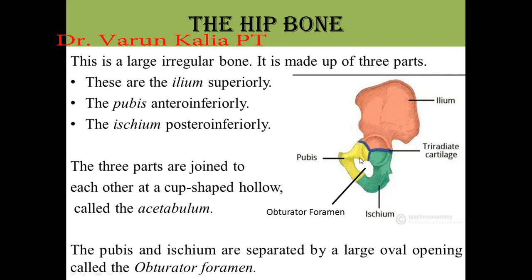This is the pubic bone, and this is the ischium bone. The two are separated by a hollow opening known as the obturator foramen.